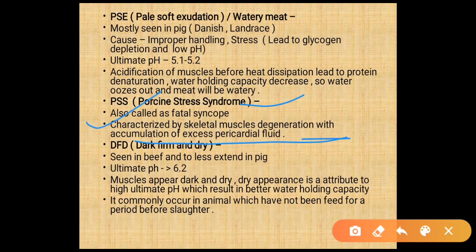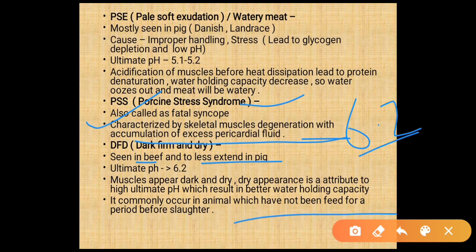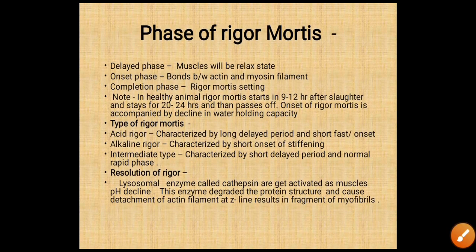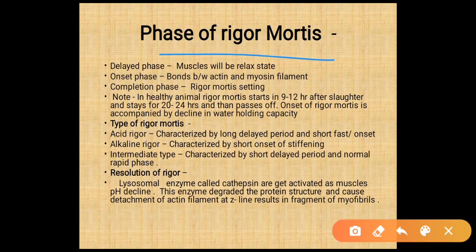DFD (dark, firm, and dry) meat is mainly seen in beef and less common in pork. The ultimate pH is 6.2. The dark, dry appearance results from the high ultimate pH, which increases water holding capacity. DFD commonly occurs in animals not fed prior to slaughter.